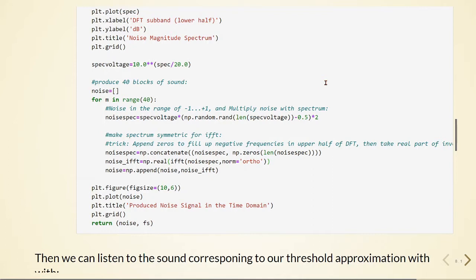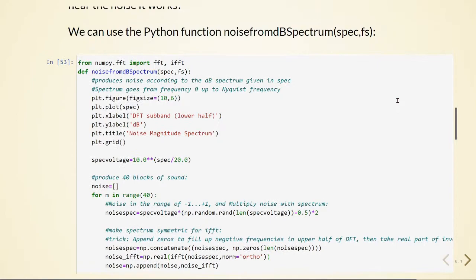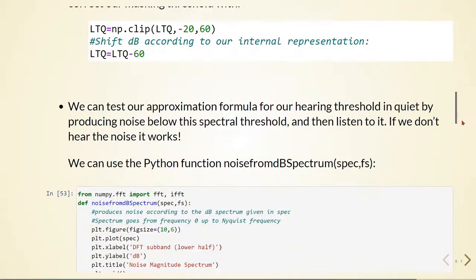This is a simple way to demonstrate our idea. So keep in mind that clicks can happen — if you hear some clicks, those are artifacts generated when we append these blocks in the for loop, not noise from something else. The idea is that we are going to first generate white noise, which has a flat frequency spectrum, and then listen to it. Next we are going to generate noise with a shape that is according to the threshold in quiet.